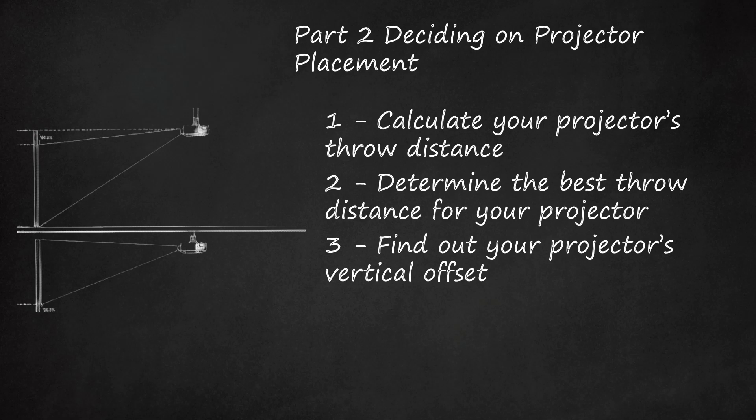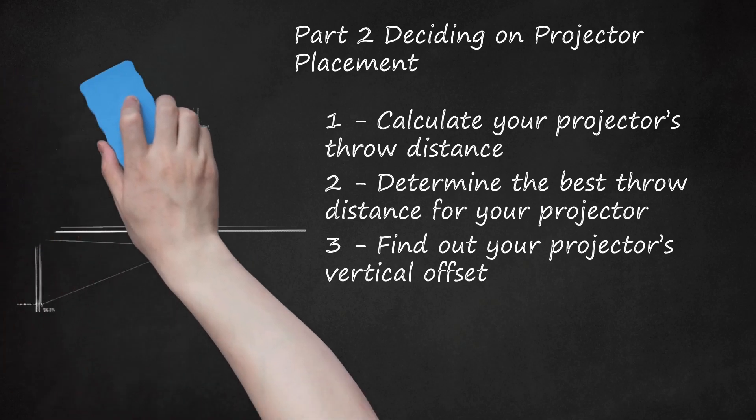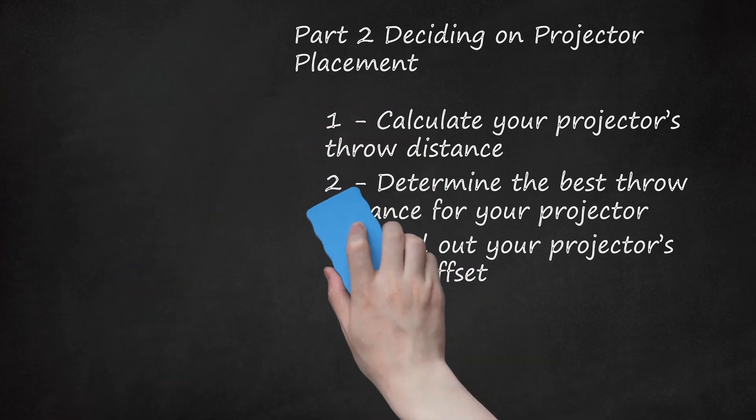Many projectors are equipped with a vertical lens shift, which allows you to adjust the image height without having to move the projector. If yours has this, try holding your projector at different heights while adjusting the lens shift to see where it works best before mounting it. If your projector doesn't have a vertical lens shift, you'll need to place it at exactly the recommended height.